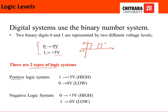Logic systems are further divided into two types: positive logic and negative logic. In positive logic, one is five volts and zero is zero volts, also represented as high or low. In negative logic, it is exactly the reciprocal of the positive logic system.